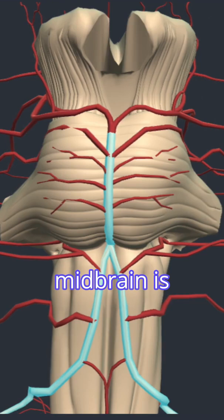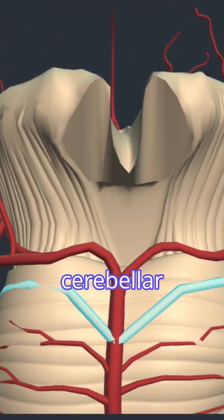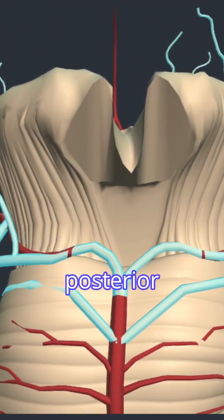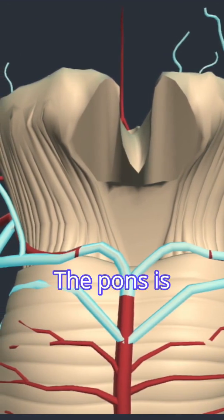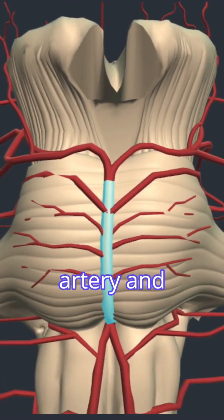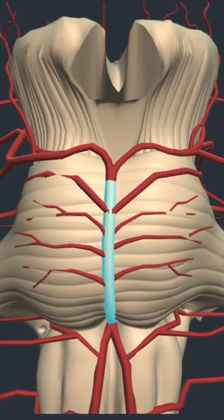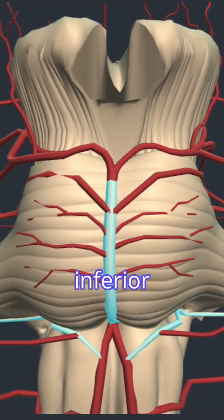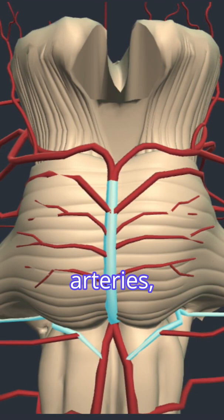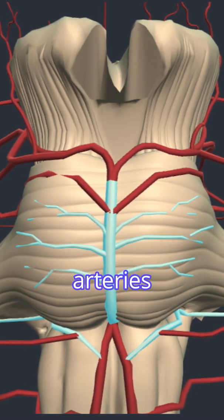The midbrain is supplied by the superior cerebellar arteries and posterior cerebral arteries. The pons is supplied by the basilar artery and its branches. This includes the anterior inferior cerebellar arteries, the pontine branches or paramedian arteries, and superior cerebellar arteries.